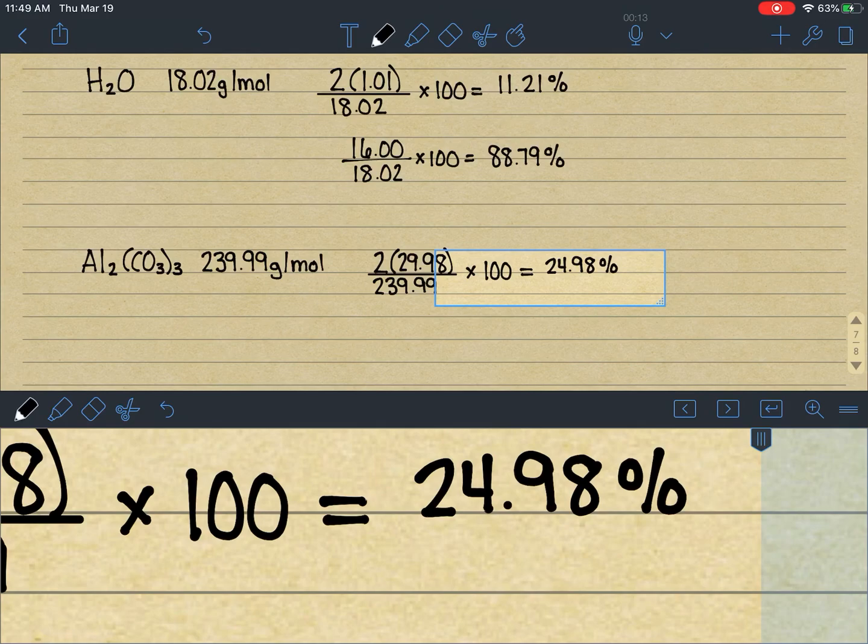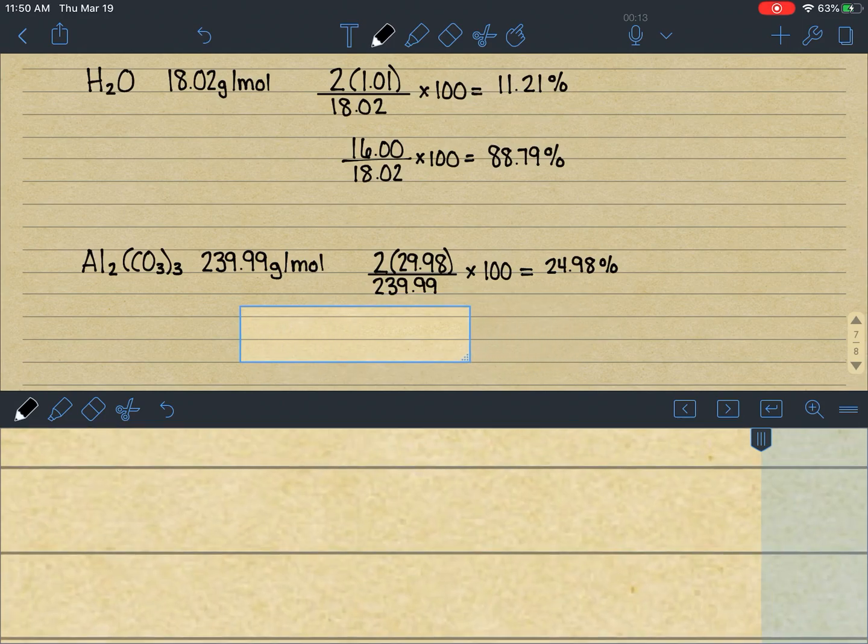Calculating out a percent composition and then utilizing that is a skill we will build upon when we start looking at empirical and molecular formulas. A lot of the data that we're given relies on this ability to take a percentage and convert it over to a mass. So very helpful for the future.